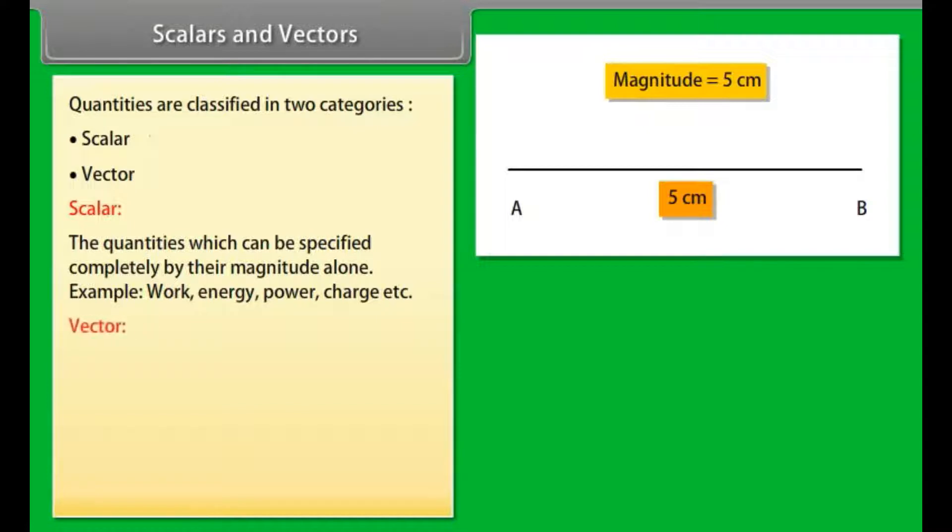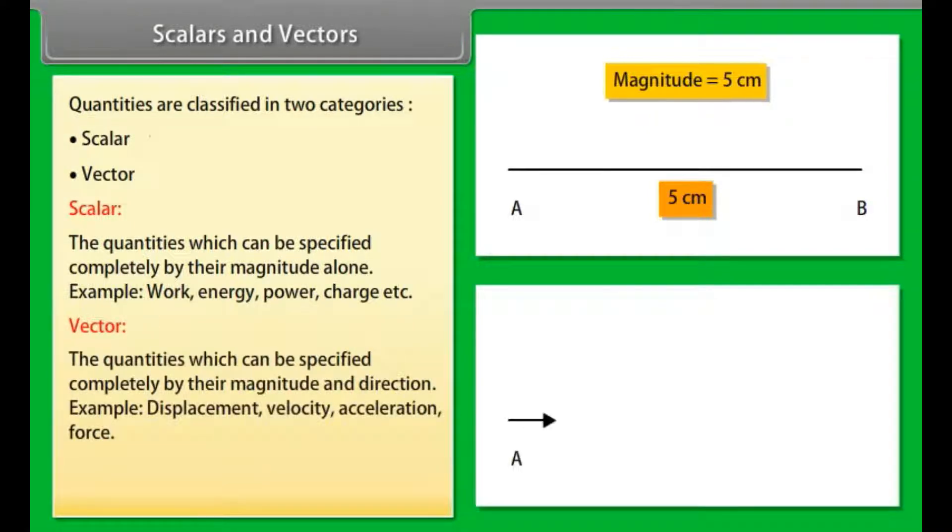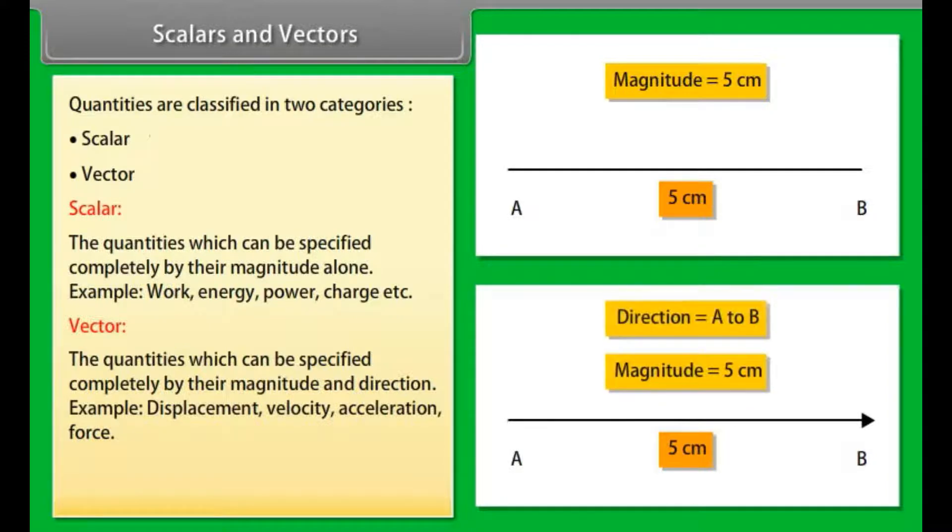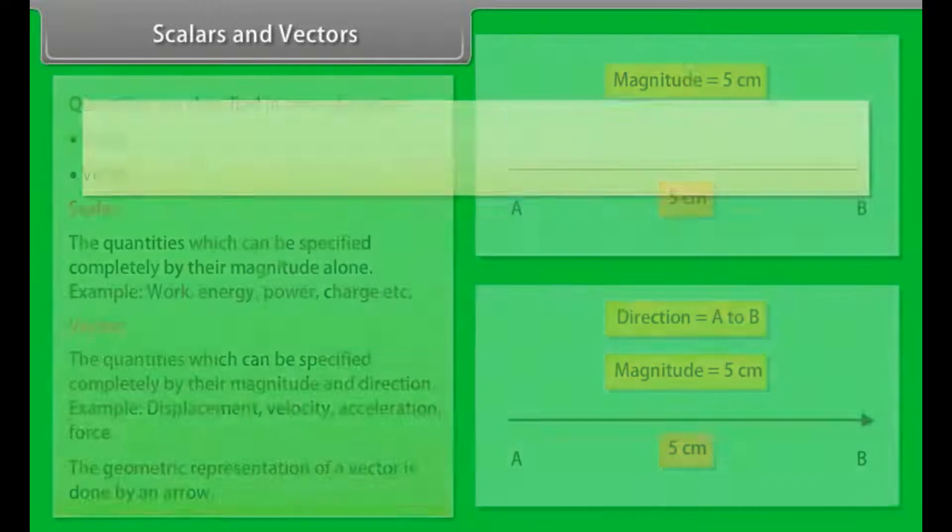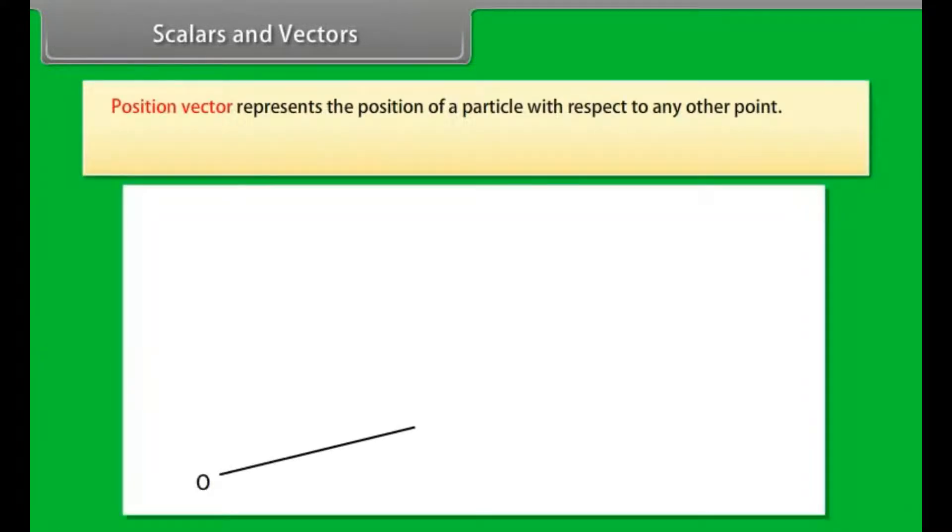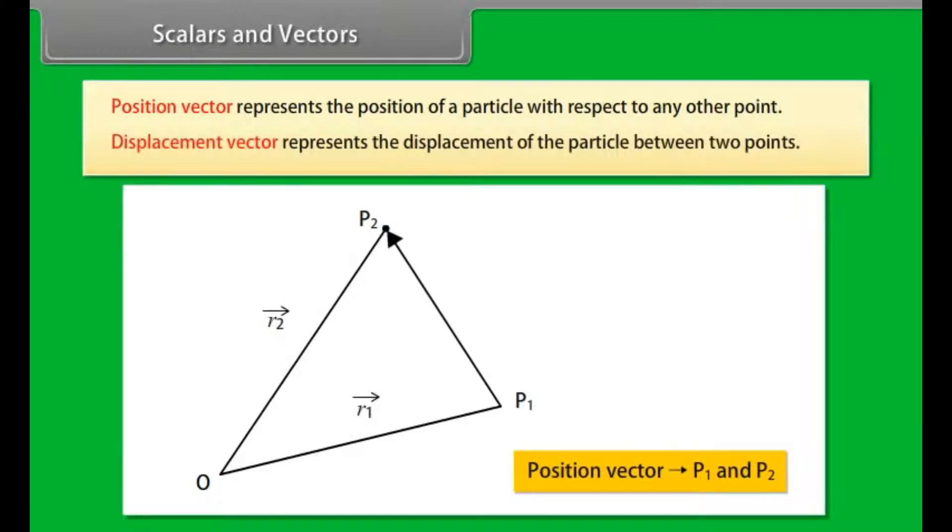Vector: The quantities which can be specified completely by their magnitude and direction. For example, displacement, velocity, acceleration, force. The geometric representation of a vector is done by an arrow. Position vector represents the position of a particle with respect to any other point. Displacement vector represents the displacement of the particle between two points.